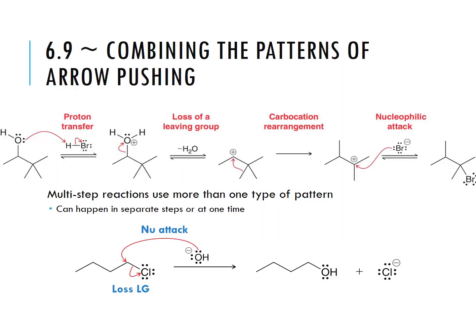In the section we're looking at, it's explaining that in most reactions we don't just need one of those mechanism patterns — we actually need multiple mechanism patterns. In this reaction up here, we're starting with a proton transfer. Our oxygen is getting protonated by our acid here, so notice we have two arrows. The first arrow is the bond forming between the oxygen and the hydrogen.